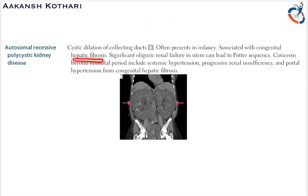The recessive form presents with hepatic fibrosis and significant oliguric renal failure in utero. If there is renal failure in the uterus, it can lead to Potter sequence. Renal failure leads to oliguria — less production of urine — and hence less production of amniotic fluid, which leads to Potter sequence.